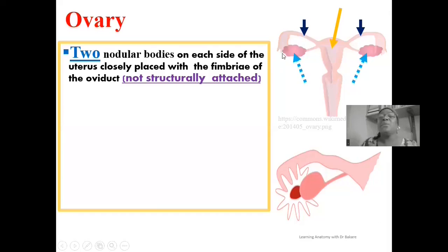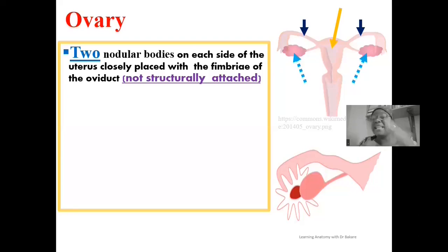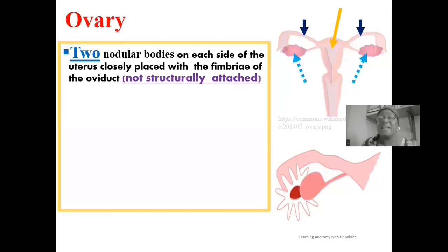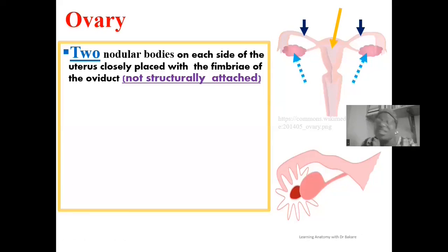When ovulation occurs, there could be displacement of the released egg into the pelvic cavity. But because of the suctioning mechanism put in place by the fimbrae of the oviduct, it sucks the egg off as soon as it is released — and this is under hormonal influence. It's important to establish this mechanism because the ovary is not structurally connected to the terminal part of the oviduct, which is the fimbrae, but it is closely positioned to it.